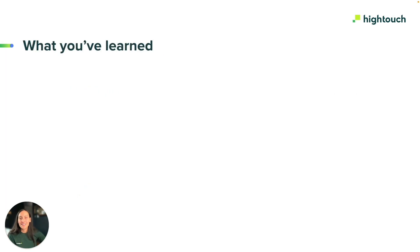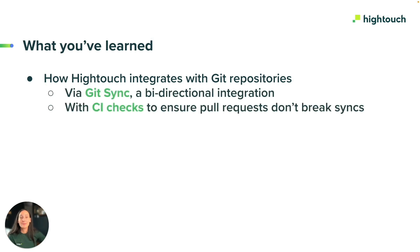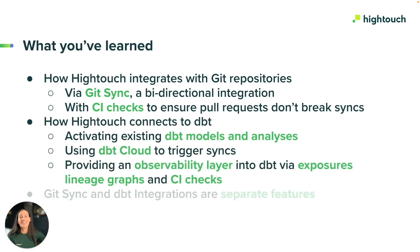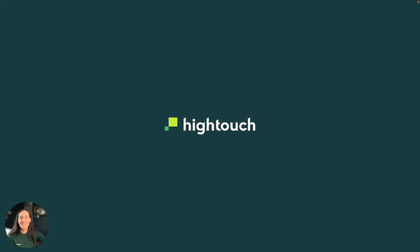To summarize, Hitech provides integrations with Git repositories as well as dbt to more easily version control and orchestrate your modeling and syncing. Note that though GitSync and dbt integrations offer similar benefits, they are independent of one another — you don't need to enable GitSync to use our dbt integrations and vice versa. That's it for now. Check out our docs to learn about other orchestration extensions with tools like Airflow, Daxter, Prefect, and Fivetran. Thanks for watching.